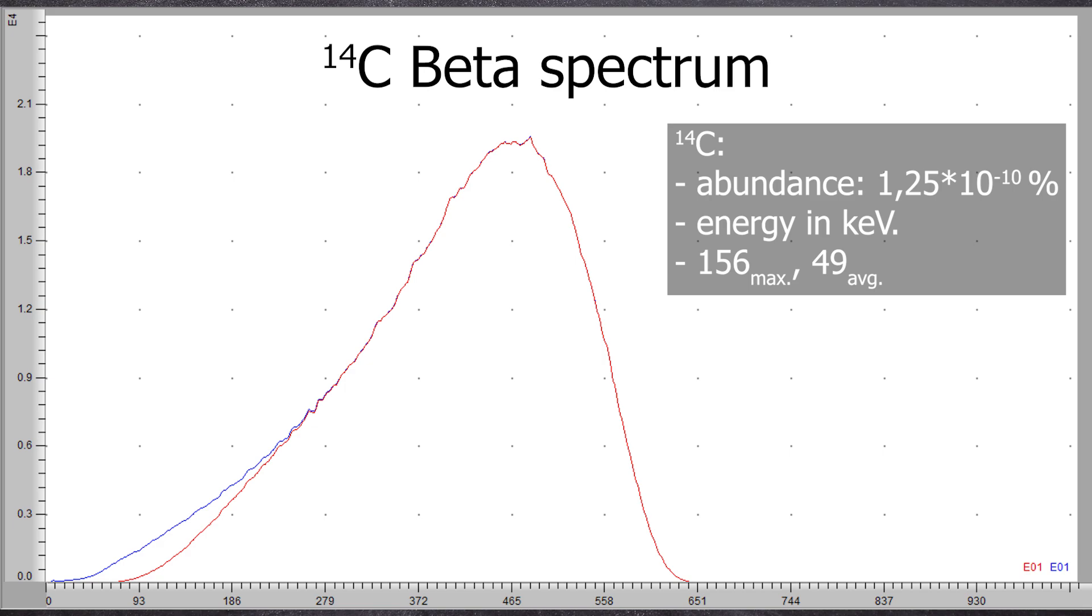The spectrum we can see here corresponds to a classical beta spectrum. The LSC has a maximum efficiency of up to 100% for betas. The gammas of an LSC sample pass right through the cocktail without noticeable interaction, but they can still disrupt the measurement through the photoelectric effect if, for example, a gamma calibration standard is right next to the device.